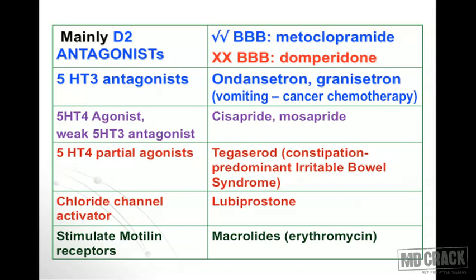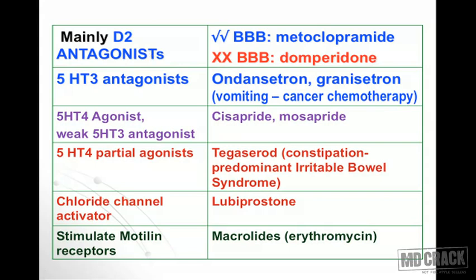We have a table showing all prokinetic drugs — the left column shows mechanism of action and the right column shows the drug and salient features. Starting with D2 blockers or D2 antagonistic agents: they are prokinetic and anti-emetic agents. Metoclopramide crosses the blood-brain barrier; domperidone does not cross the blood-brain barrier much. Both are commonly used anti-emetic agents, and their main action is D2 blocking.